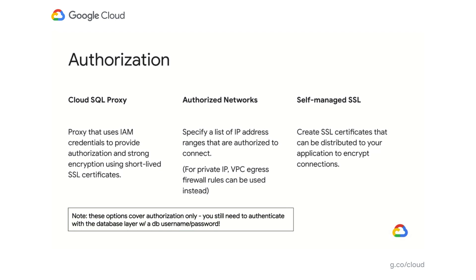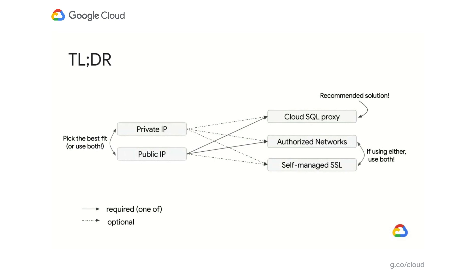It's important to remember that these options are for authorization only — you still have to authenticate with the database using your username and password. To summarize: you have private IP and public IP. For public IP, you have to use either the Cloud SQL proxy or authorized networks. We also recommend that if you are using authorized networks, you use self-managed SSL to encrypt your data in transit. However, this is automatically done by the Cloud SQL proxy, so if you use it, you won't have to worry about managing your own SSL. Use whichever path works best, and while we recommend the Cloud SQL proxy, it's perfectly okay to use authorized networks and self-managed SSL as well.